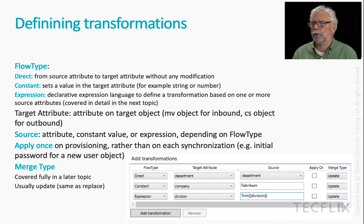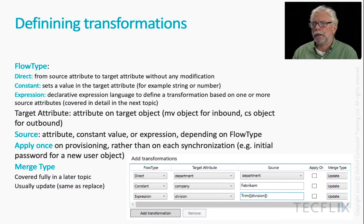Direct is when you simply want to take the value of a source attribute and flow it to a target attribute. The source in an inbound will be the connector space, and the source in an outbound will be the metaverse, and the other way around for the target. The target attribute is an attribute on the target object that's going to be populated. The source is either the attribute itself or a constant value.